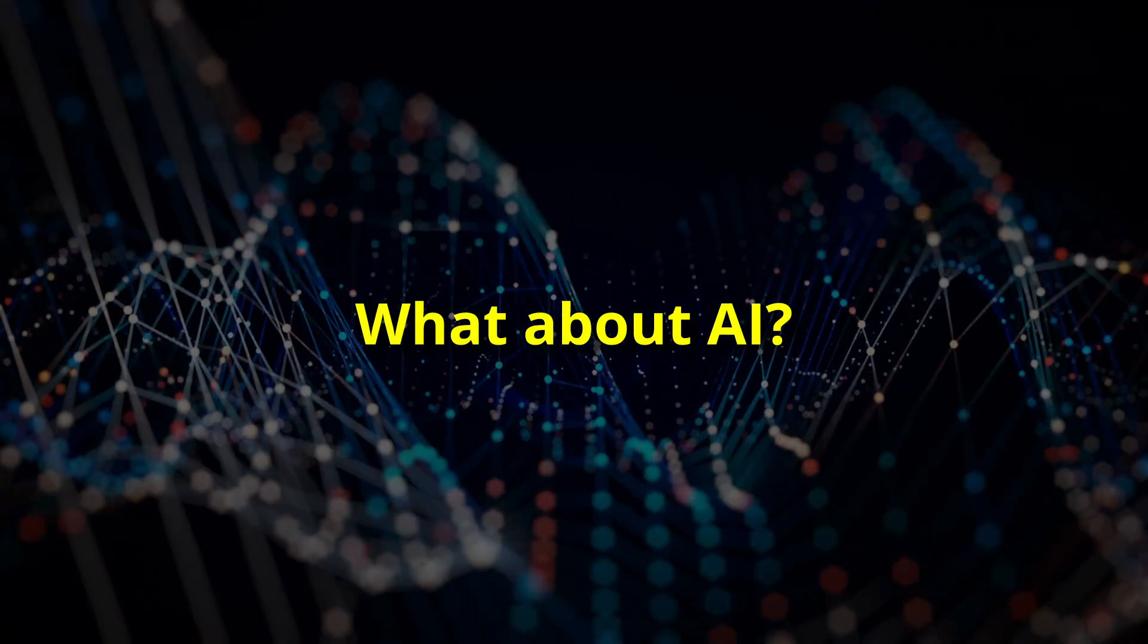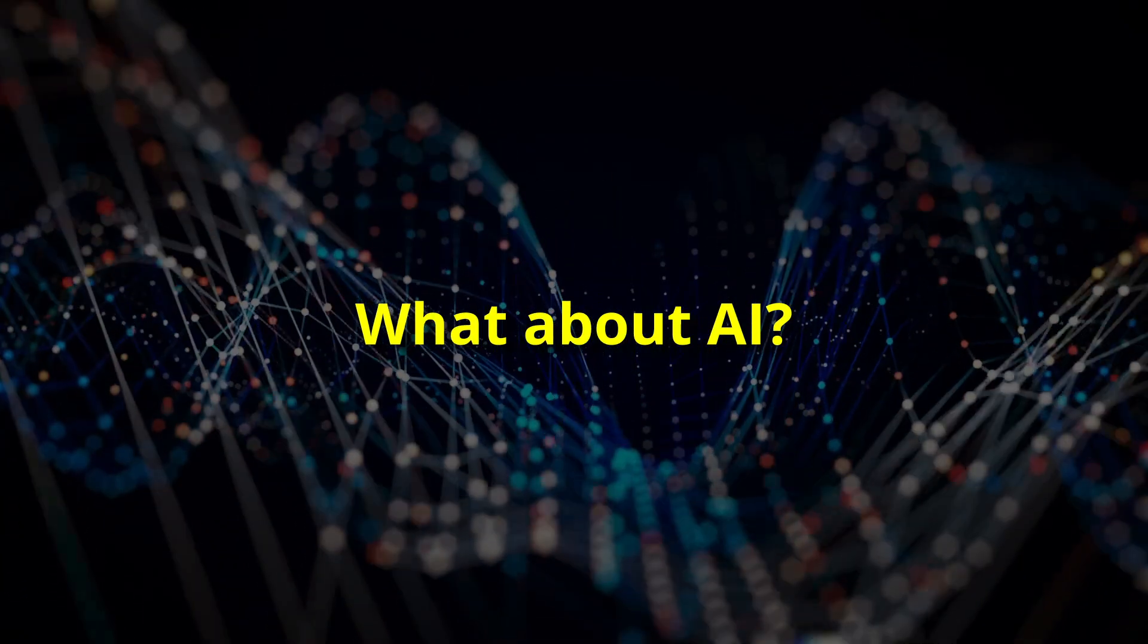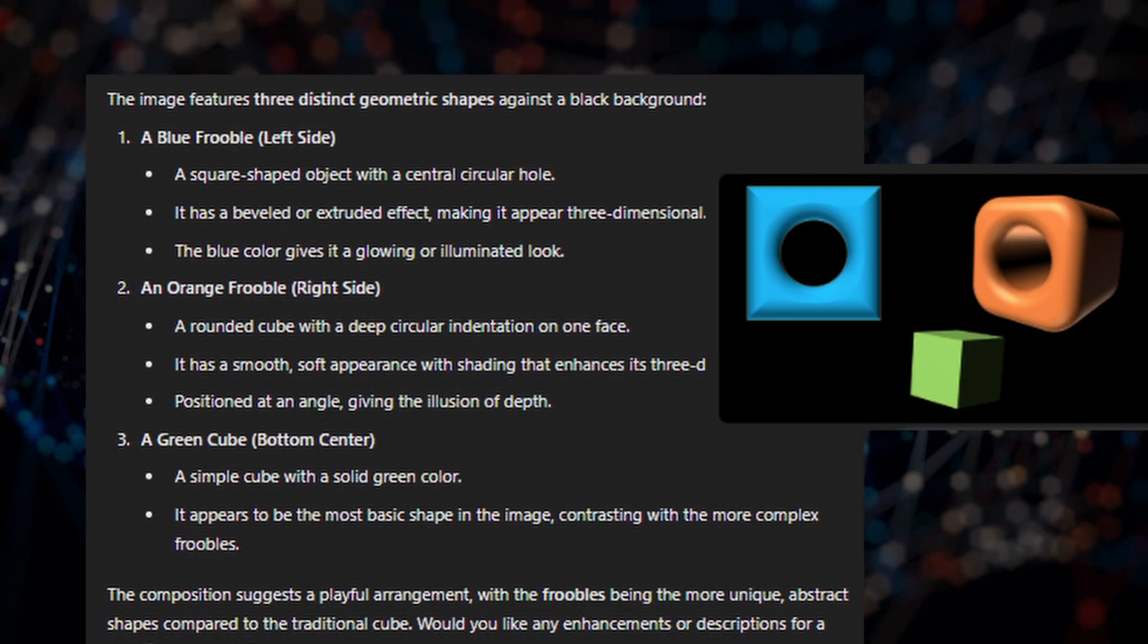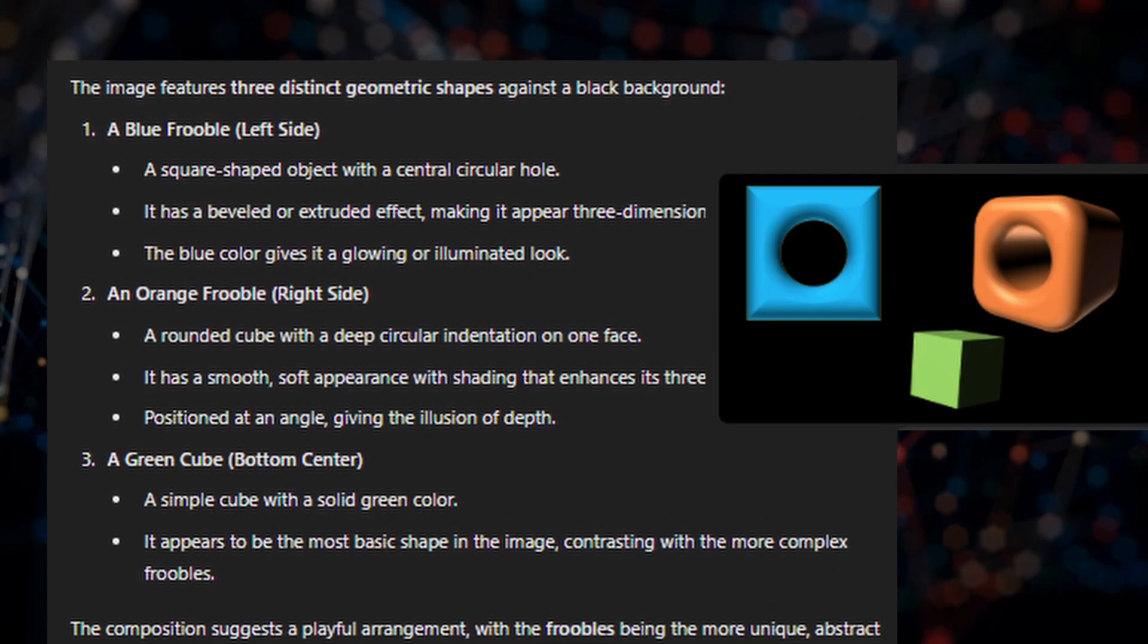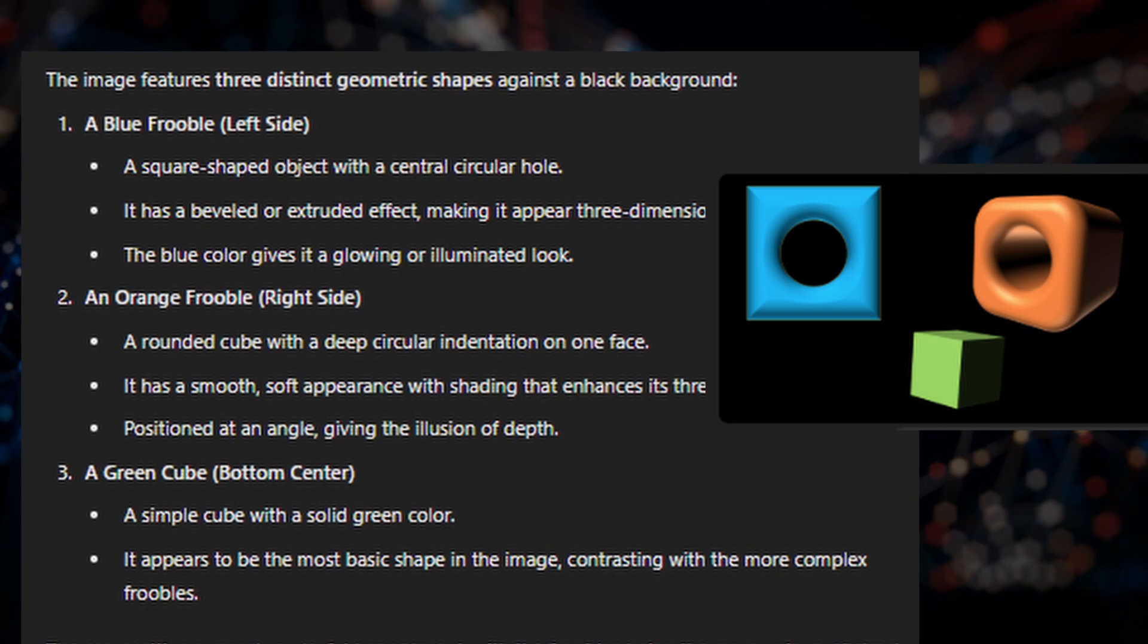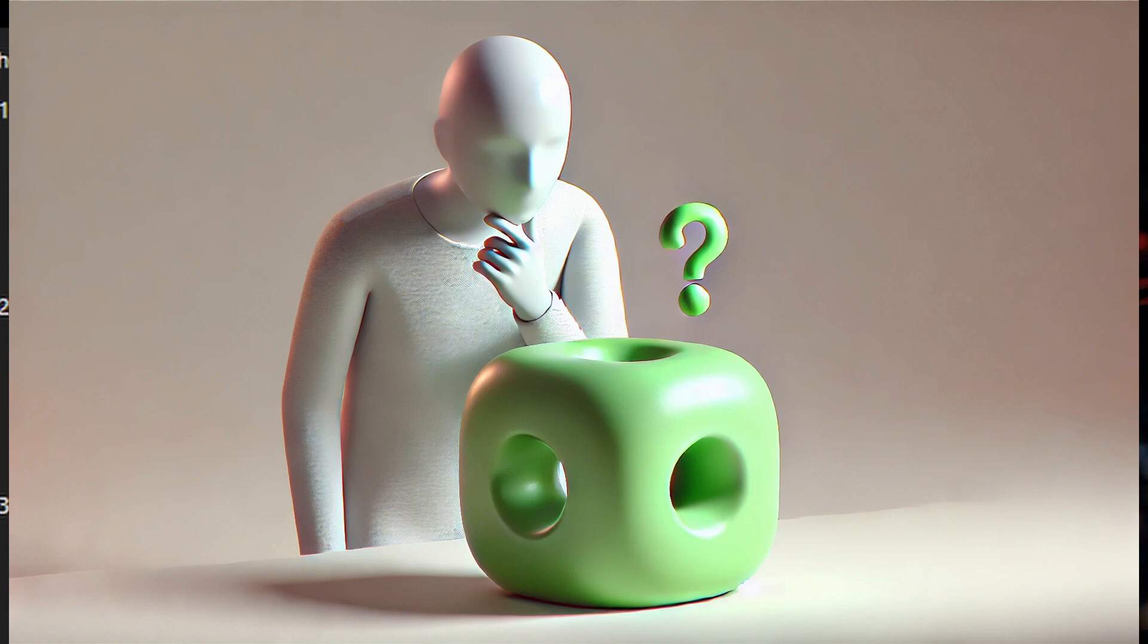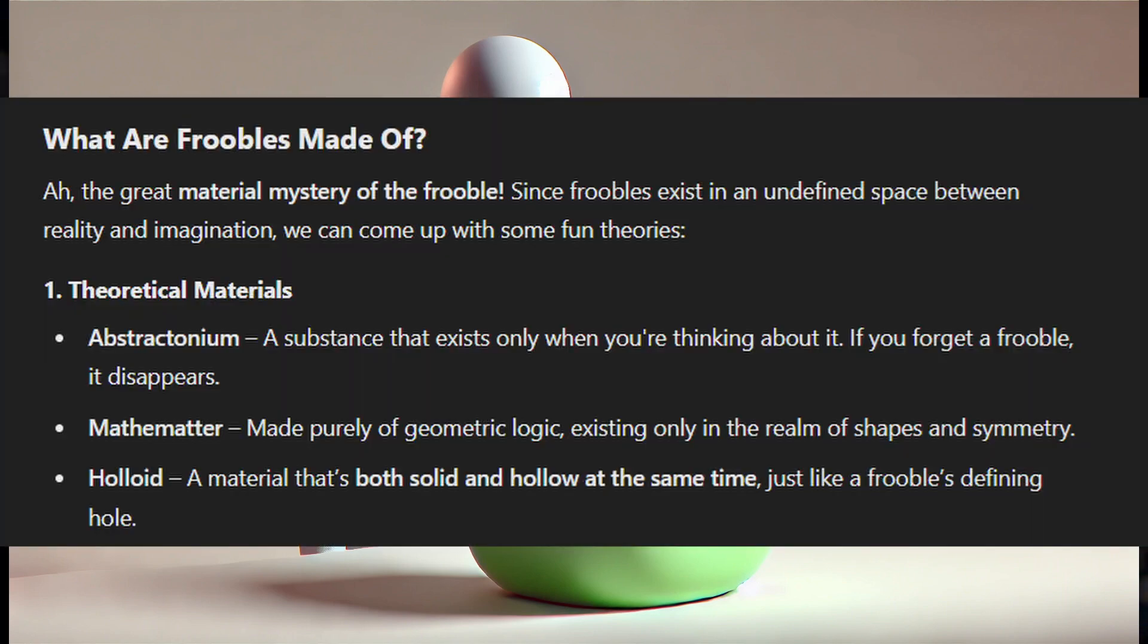Artificial intelligence is impressive, but doesn't learn the way we do. I showed ChatGPT a frubal and then asked it a few questions, and the results were impressive, including this image of a person looking at a green frubal. It even proposed that frubals might be made of abstractonium or mathematter. At the same time, it wrote a few paragraphs explaining how and why AI couldn't possibly do any of this. So, make of that what you will.